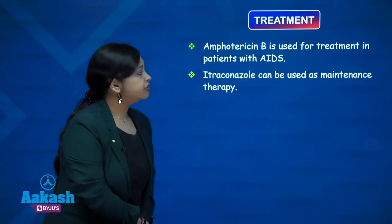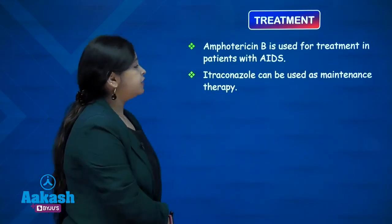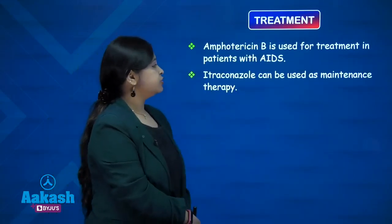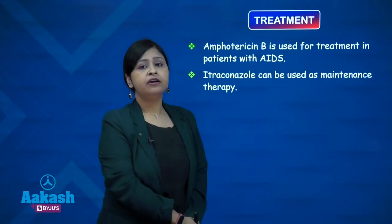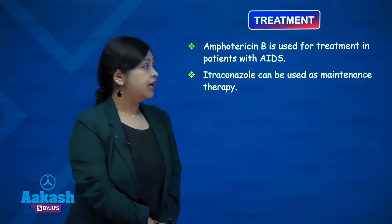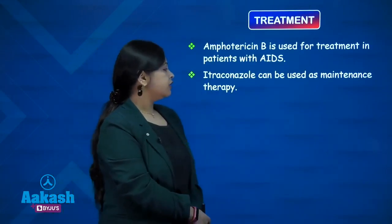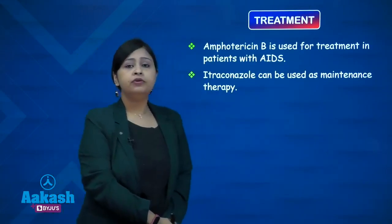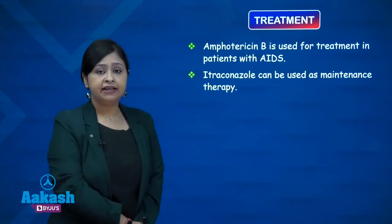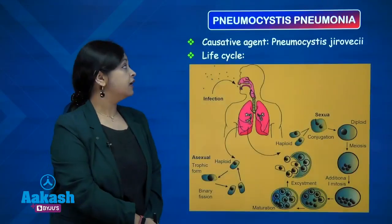Coming to treatment: Amphotericin B is used for treatment of patients with AIDS. Itraconazole can also be used as maintenance therapy in such patients.